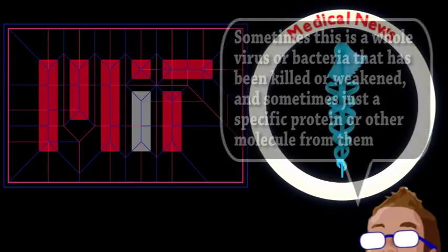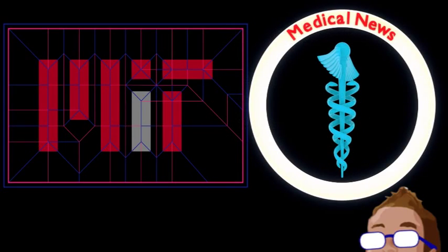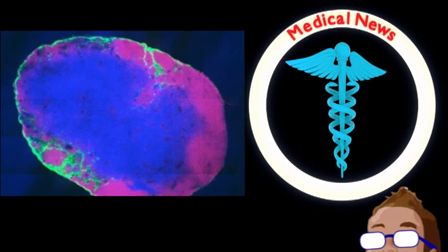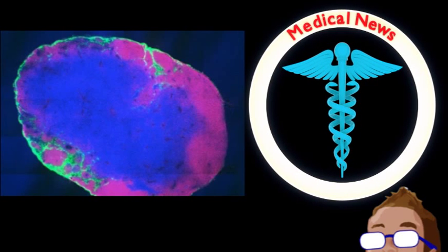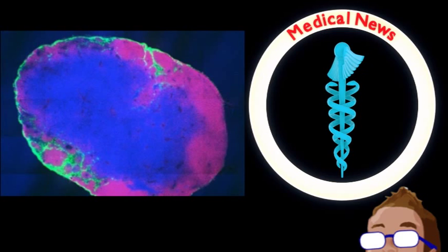However, no matter the type of vaccine, all of the action really happens in the lymph nodes, which is home base for T-cells and B-cells. So they developed a way to deliver the antigen molecules directly to the lymph nodes.